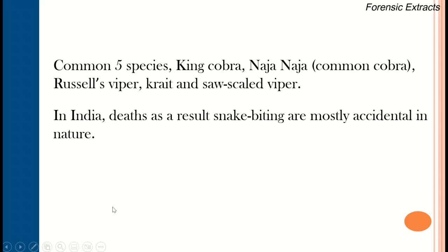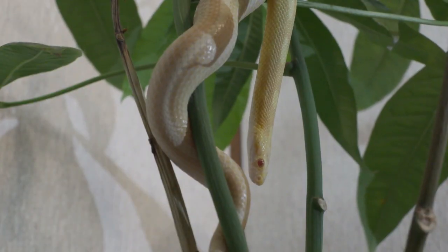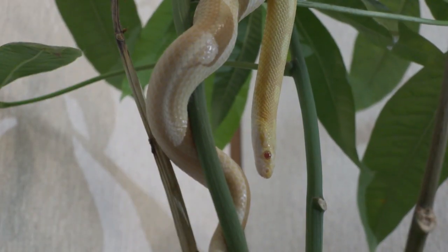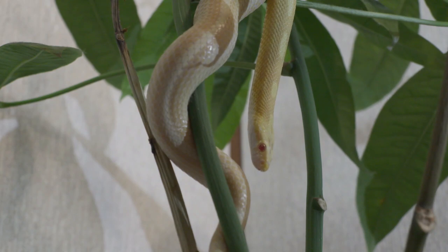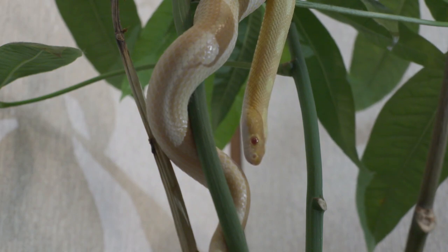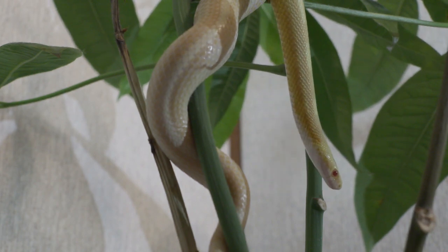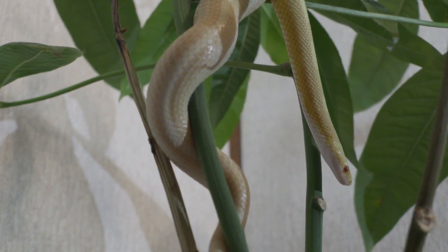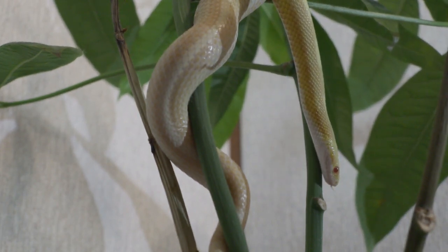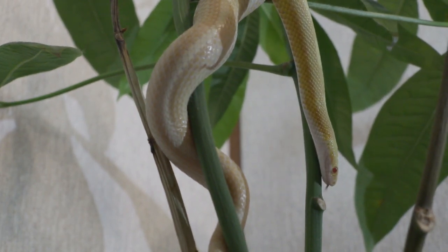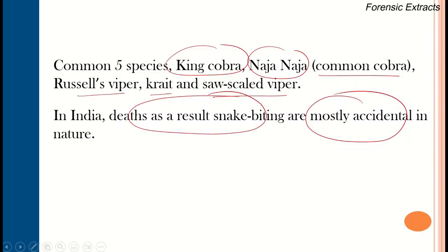The common five species of poisonous snakes include the king cobra, Naja naja (common cobra), Russell's viper, krait, and saw-scaled viper. In India, deaths from snake bites are mostly accidental in nature.